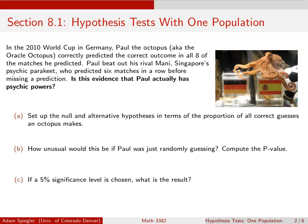And he just barely beat out his rival, Manny, the psychic parakeet from Singapore. So what I want to do here is think about, Paul was correct at predicting eight out of eight games. Does that mean that Paul actually had some psychic powers? And let me just say, how did Paul predict these games?